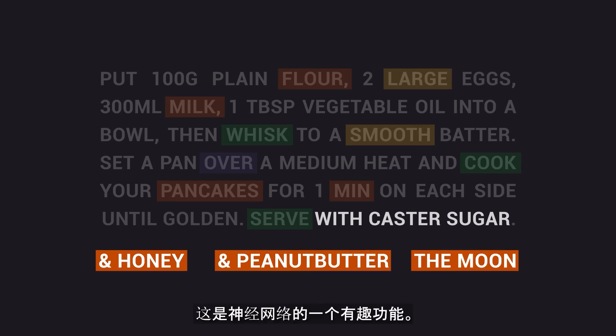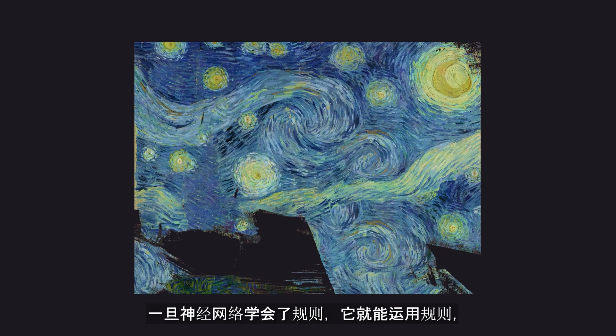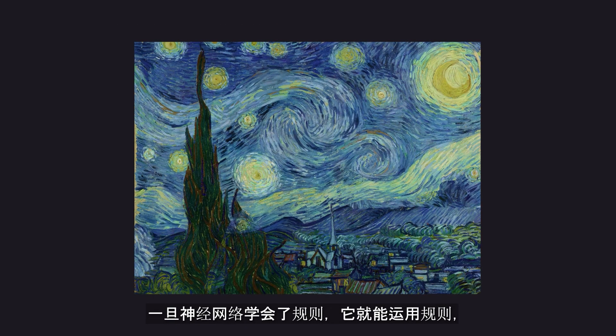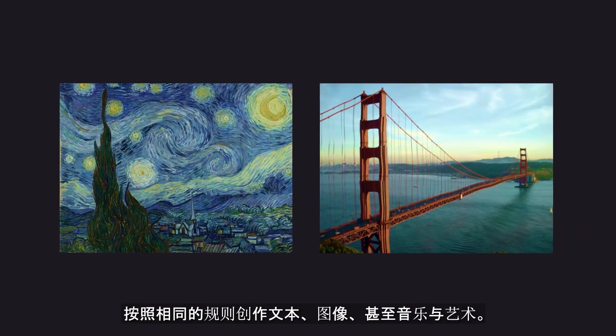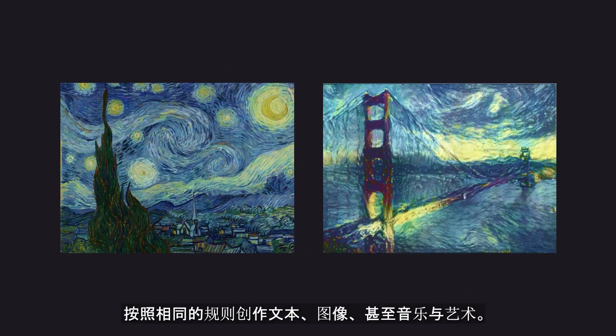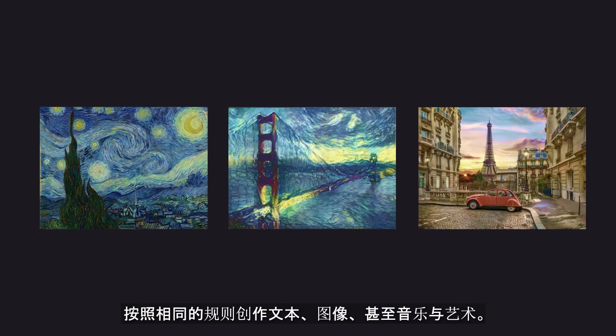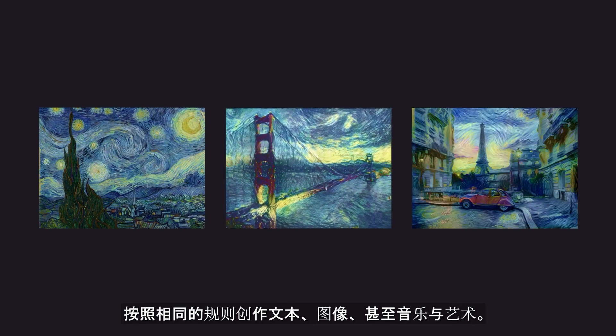This is one of the interesting features of neural networks. Once it learns the rules, it can work with these rules, creating text, images, and even music and art, following the same rules.